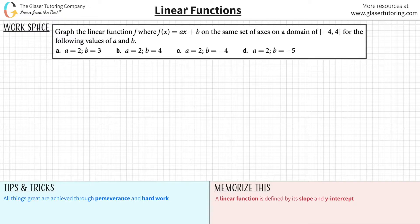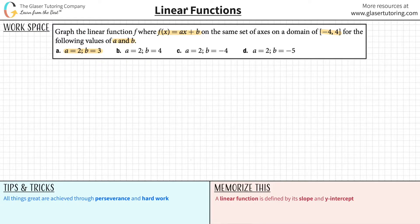Graph the linear function f where f of x is equal to ax plus b on the same set of axes on a domain of negative four to four for the following values of a and b. Letter a: a is equal to two and b is equal to three. There's a lot going on here, so let's take it piece by piece.